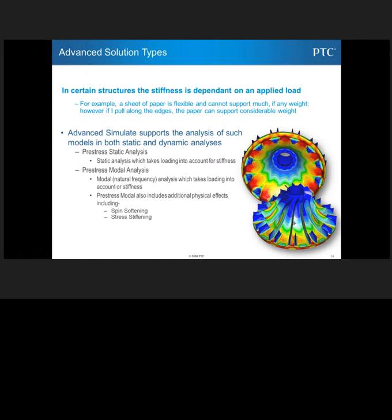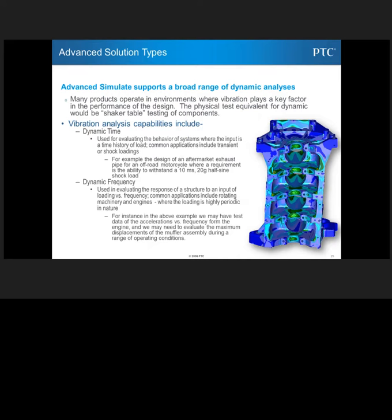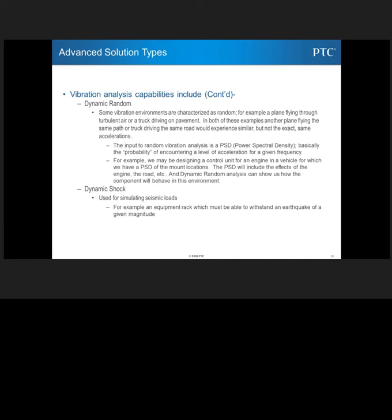We also have pre-stress simulations. So pre-stress static analysis and pre-stress modal analysis. So what you would run is you would run a static analysis ahead of time and then you would use that end result as your kind of a pre-load for your second analysis in the same way for a modal as well. So spin softening, stress stiffening are typical cases when you want to do that. Advanced Simulate covers four different dynamic analyses. Dynamic time and dynamic frequency are the two most common. So if you want to do like a shaker table type of analysis or give something a jolt and watch what happens as it dampens, these are the two you would choose for that. And then we also have dynamic random. This is where the input to random vibration is a PSD, power spectral density. And then we also have dynamic shock, which is specific for seismic loads.